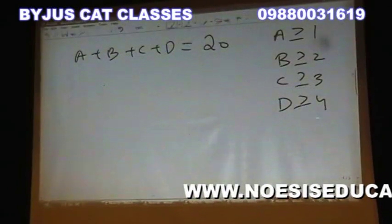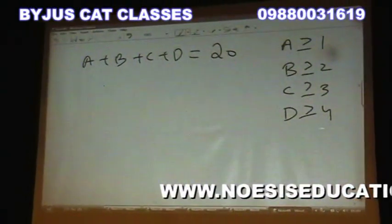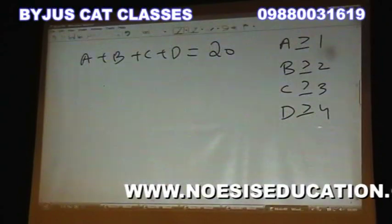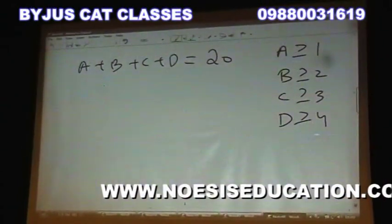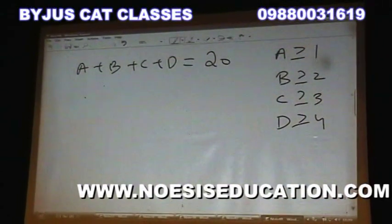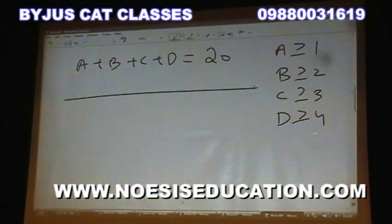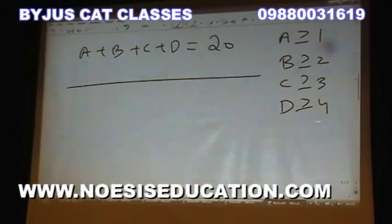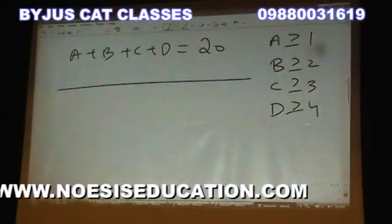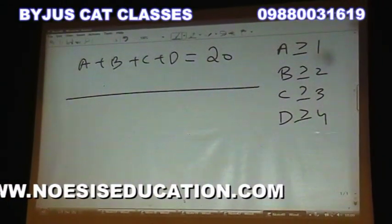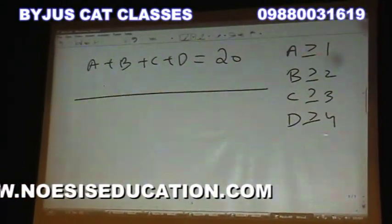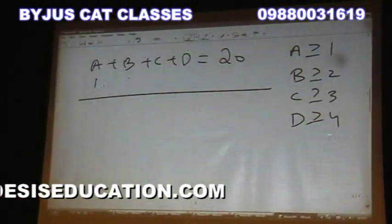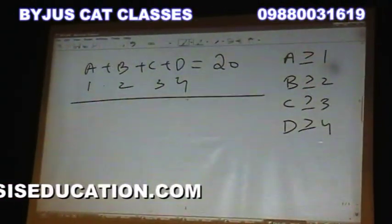A should get at least 1, B at least 2, C at least 3, D at least 4. So what's your answer? The approach is straightforward — just follow the condition. Take out 1, 2, 3, and 4 as the minimum allocations.